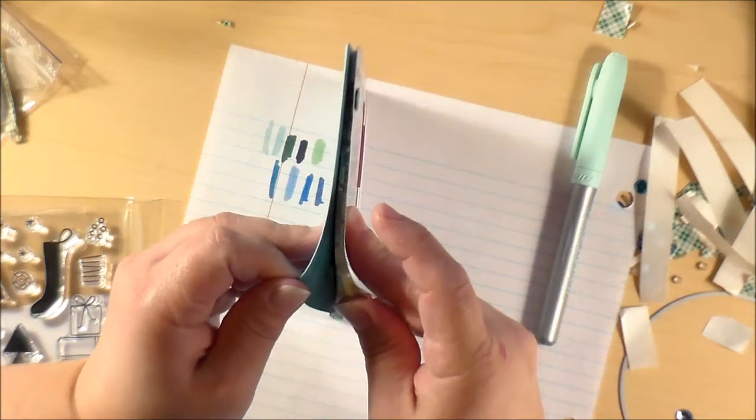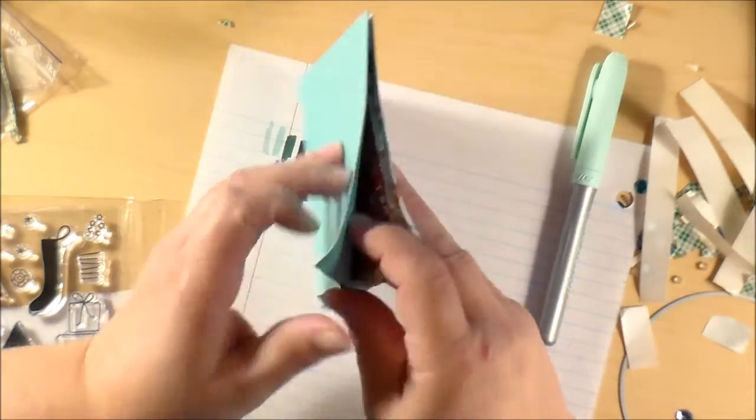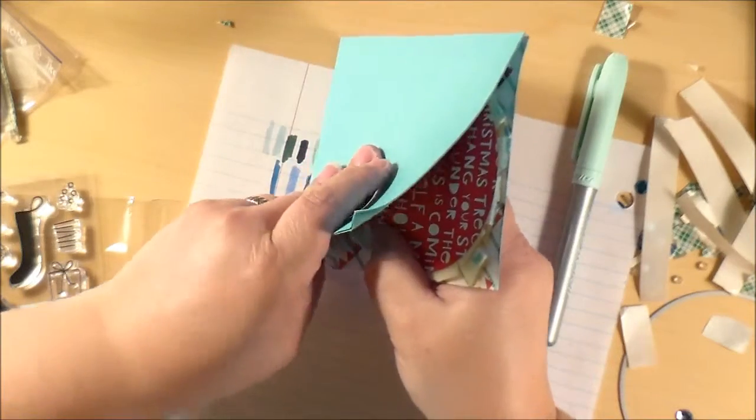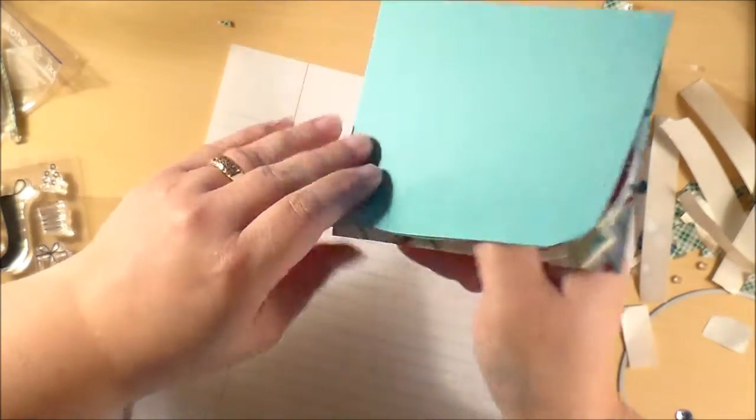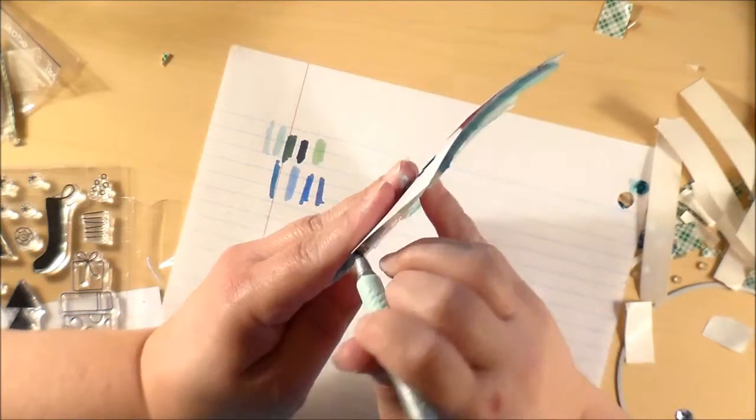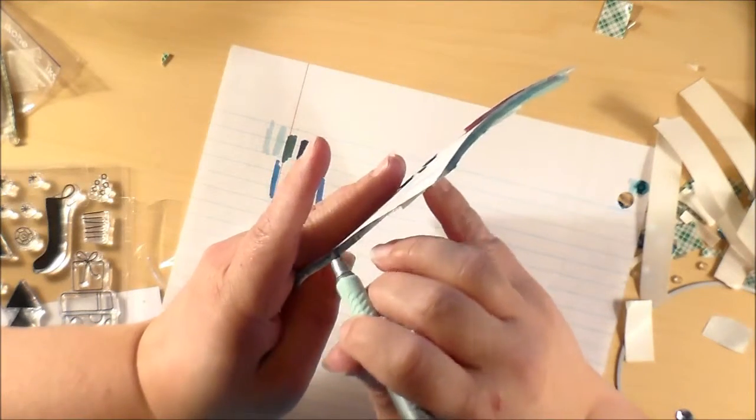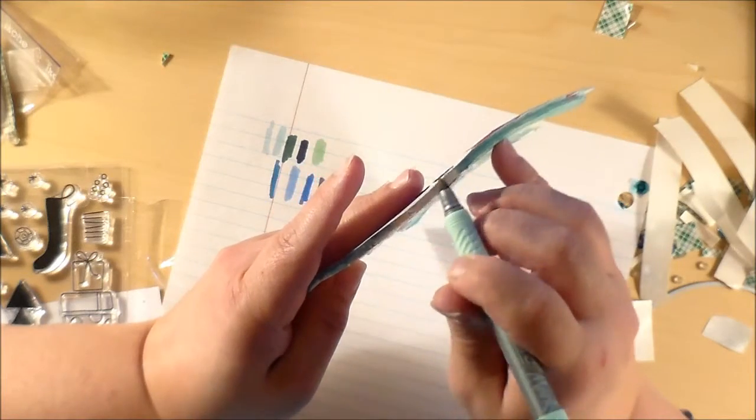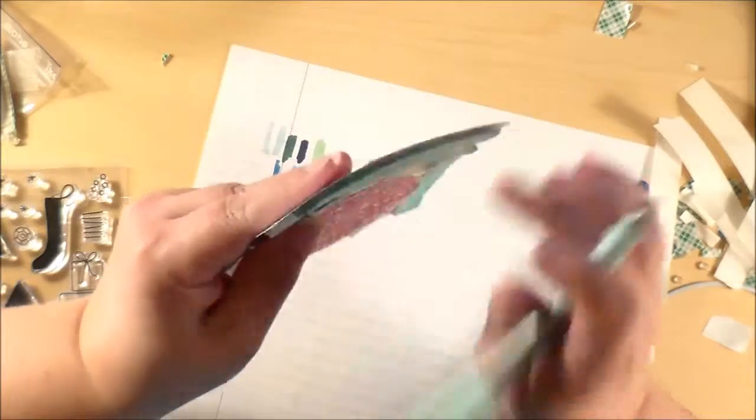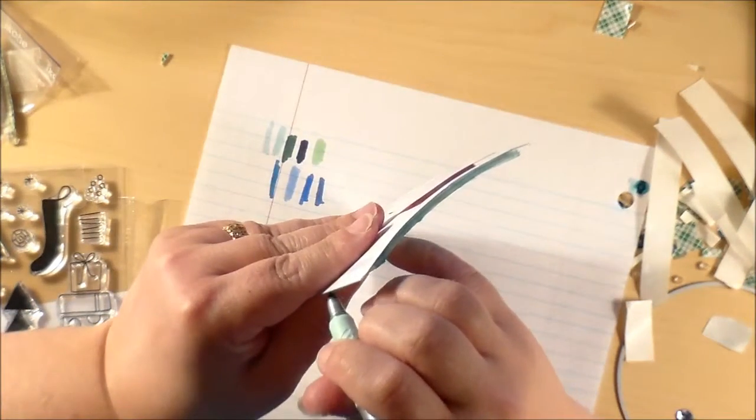Again, still trying to figure out what I was going to do. I decided the only thing I could really do at this point was to remove the shaker front from the card base, which I was able to do without destroying it. Then I came back in with my Copic marker and finished coloring the edges of the foam to help disguise them so they weren't so glaringly obvious.